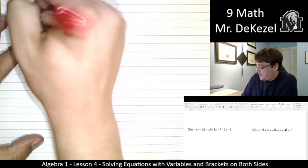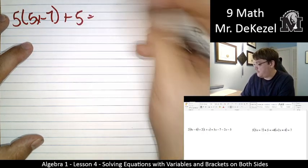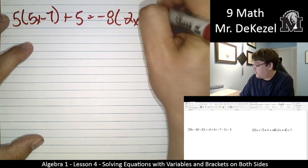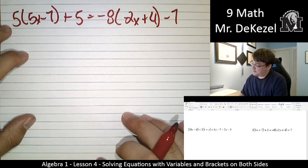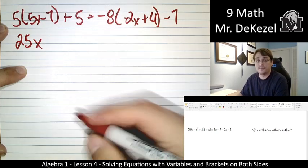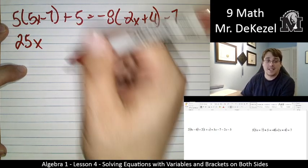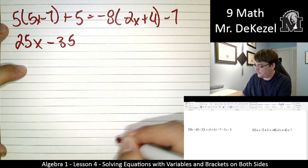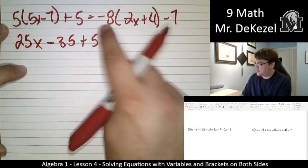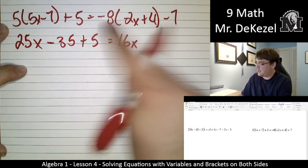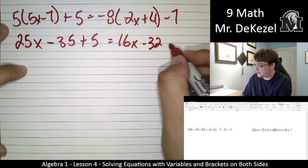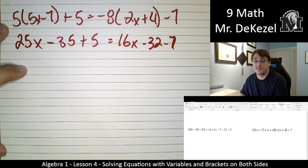All right, 5. 5 times 5x minus 7 plus 5 is equal to minus 8 times minus 2x plus 4 minus 7. All right, let's get rid of the brackets all in one step. 5 times 5 is 25, and the variable comes along. 5 times minus 7 is minus 35. Add the 5, and that's equal to minus 8 times minus 2, that's just 16x, and 8 times 4 is 32. So that's negative 32 because we have a negative times a positive. We go ahead and we have subtracted 7.